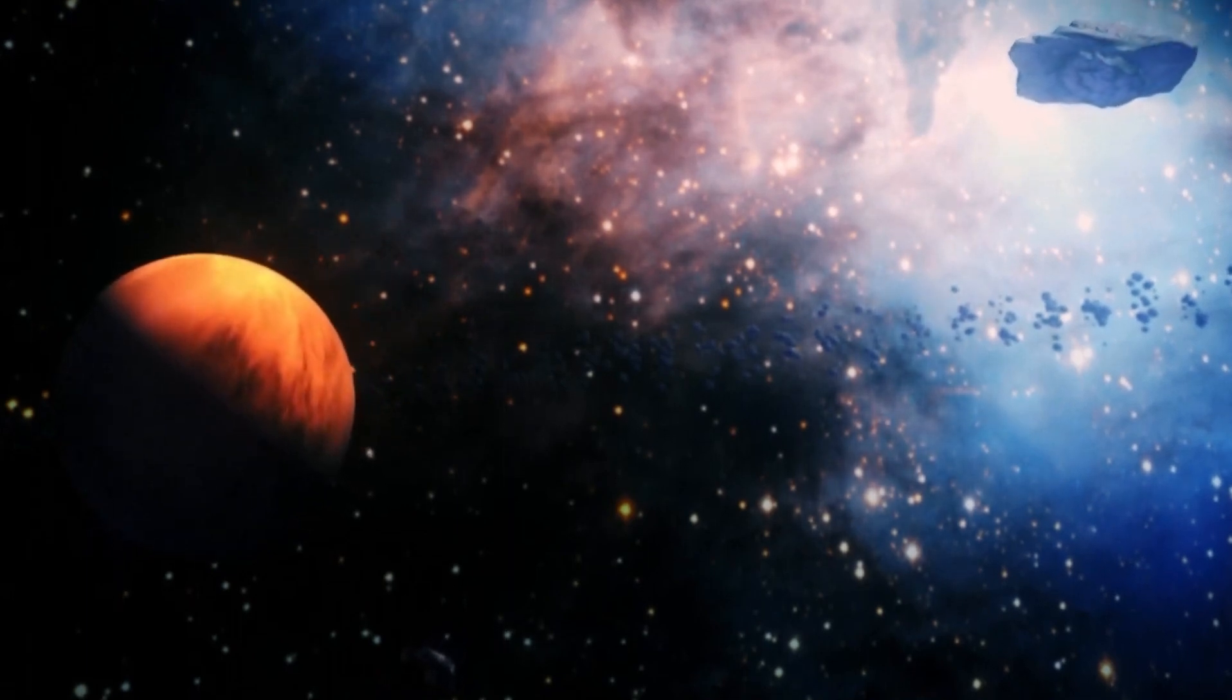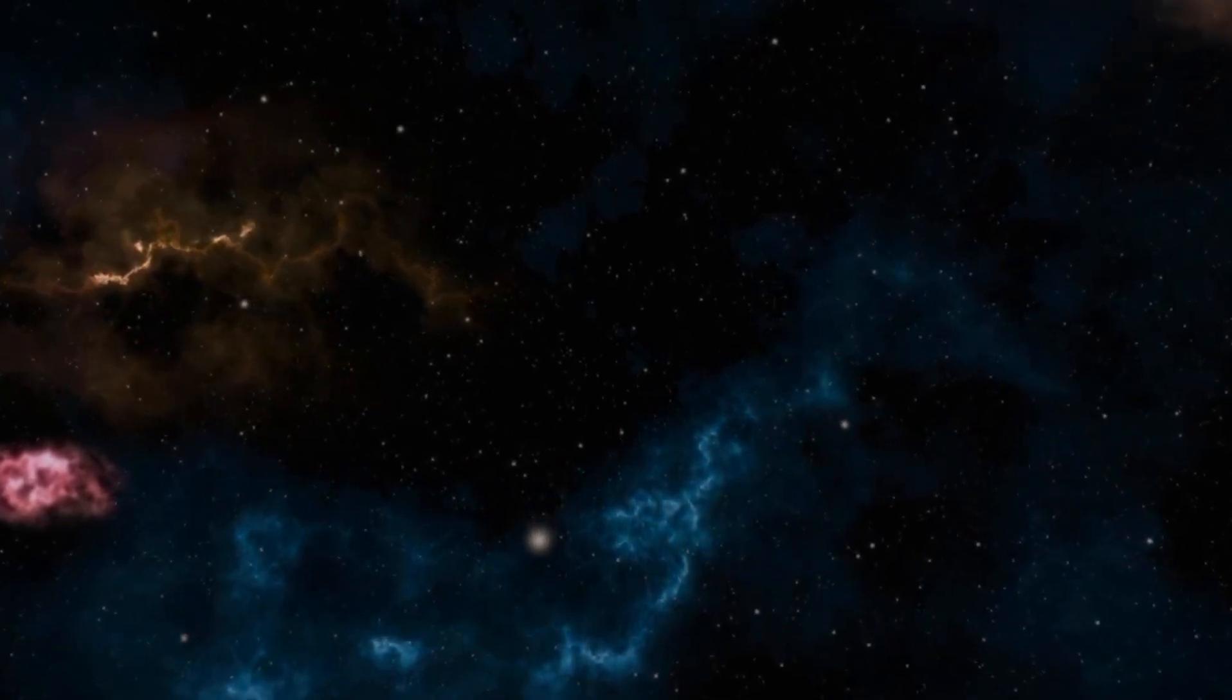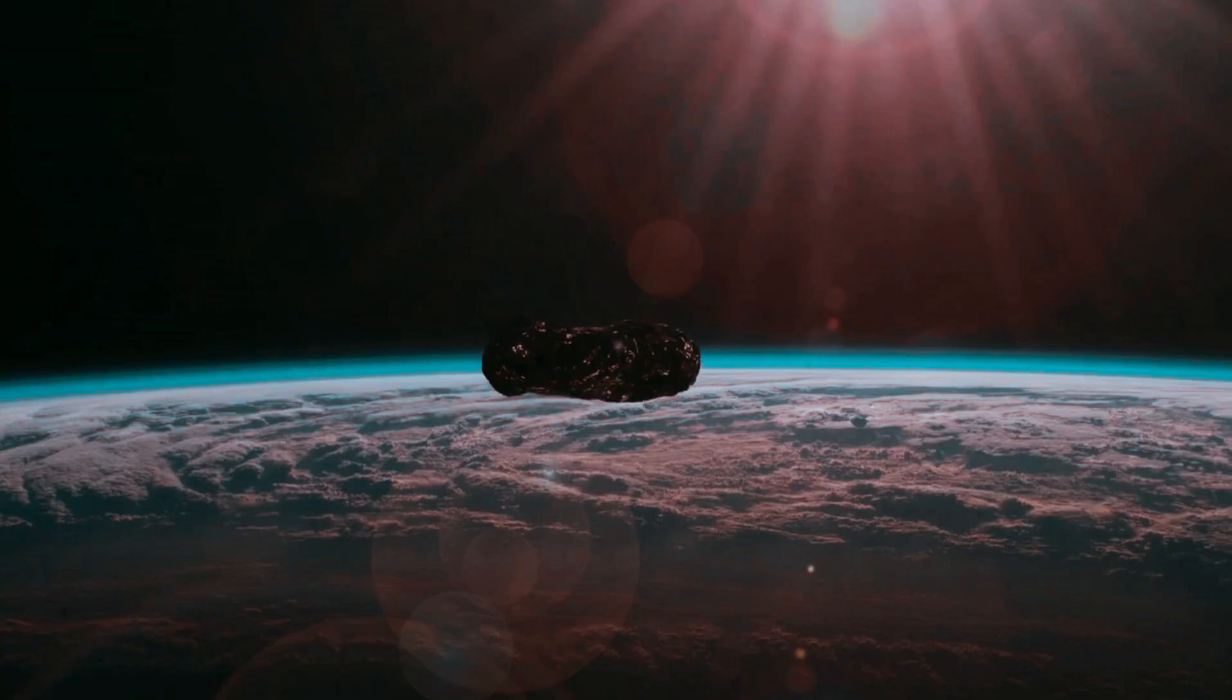The James Webb Space Telescope has also identified the faint signatures of exoplanets residing in the habitable zones of their parent stars, a leap in our quest for potential life outside our solar system. Some of these exoplanets exhibit atmospheric compositions suggestive of potential biological processes.